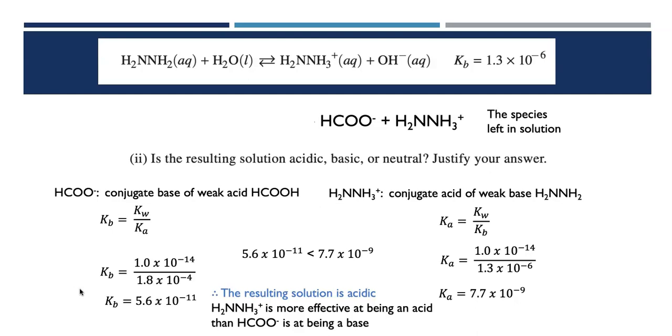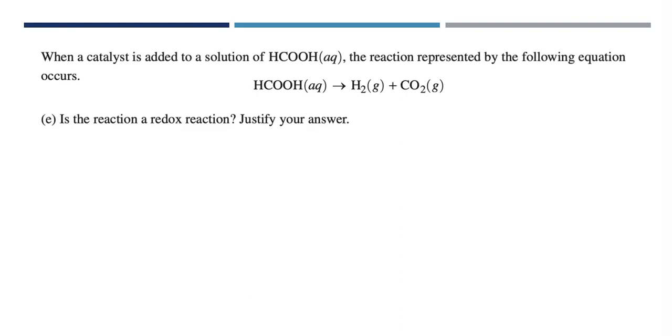All right, because the one with the bigger K value is better at doing its job. So H2NNH3+ wins the tug-of-war here, and the solution ends up being acidic. Before I go on, I do want to point out that this part was worth one point. One point if you had the correct answer, and you had to justify it appropriately. You had to realize the relative values of the Kb and Ka and use them here. Just guessing isn't enough. You had to have the correct answer and an appropriate justification. Here's part E of the problem. When a catalyst is added to a solution of methanoic acid, HCOOH, the reaction represented by the following equation occurs. HCOOH undergoes a reaction to produce hydrogen gas and carbon dioxide gas. Is the reaction a redox reaction? Justify your answer. Wait a minute, I thought this was an acid-base question. This is the college board. You know they're going to switch gears on you in the middle. You've got to be ready for that.